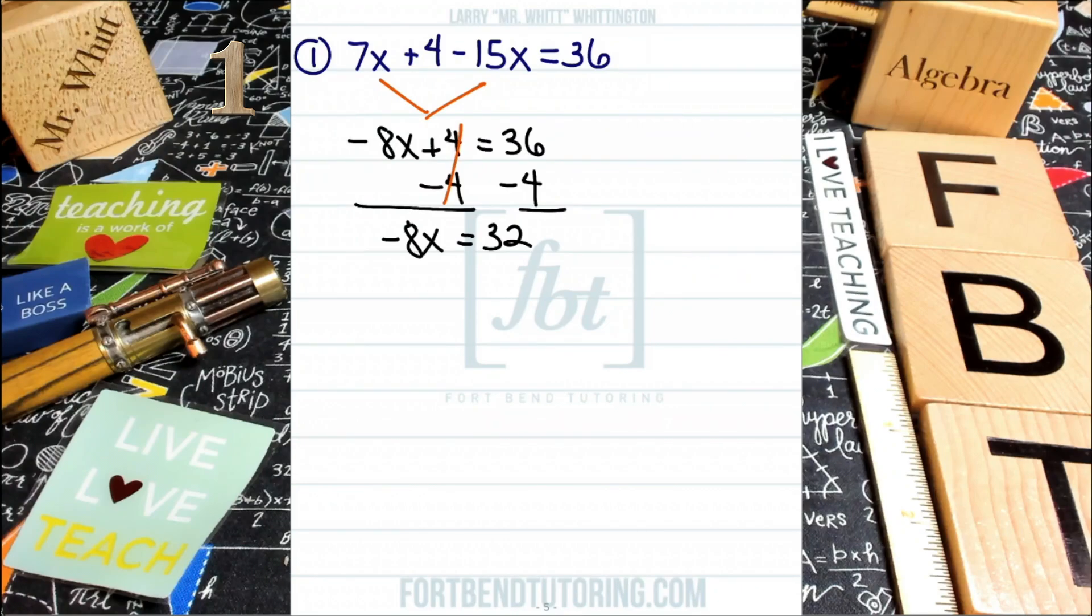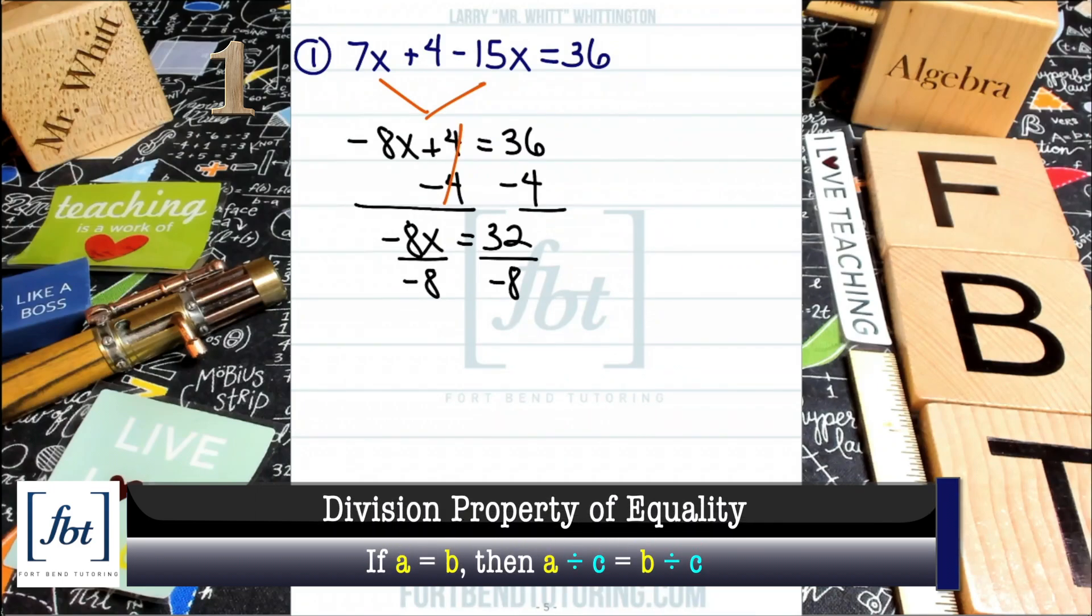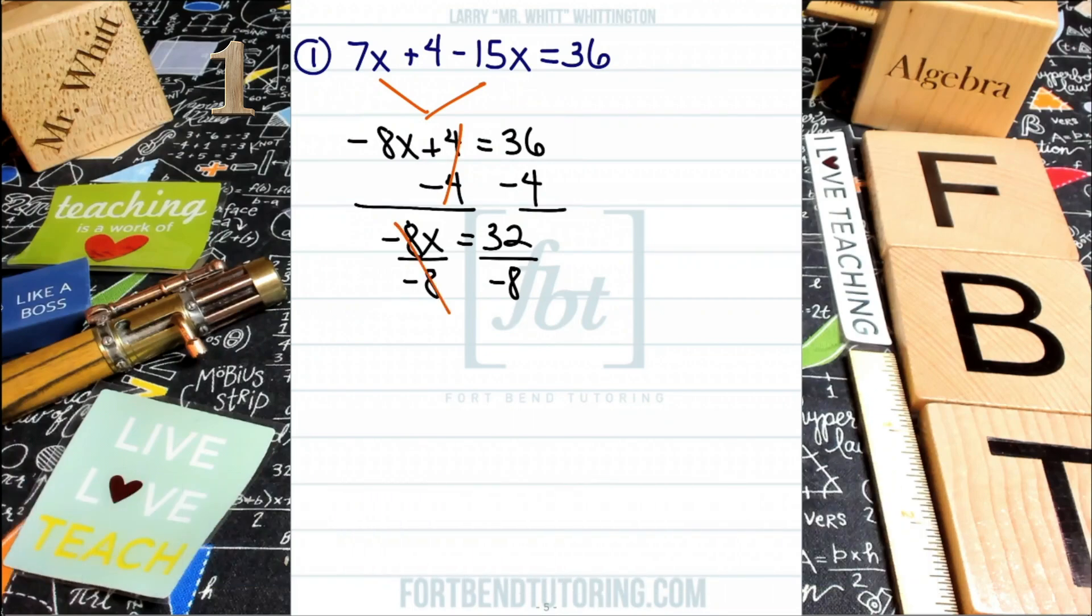And notice that we have the coefficient negative 8 multiplying on our variable x. Well, the opposite operation of that is division, right? So we'll be dividing both sides by the exact same coefficient, that exact same value of negative 8 in order to isolate our variable. So I'll be dividing both sides by negative 8, like so. And the negative 8s will cancel out.